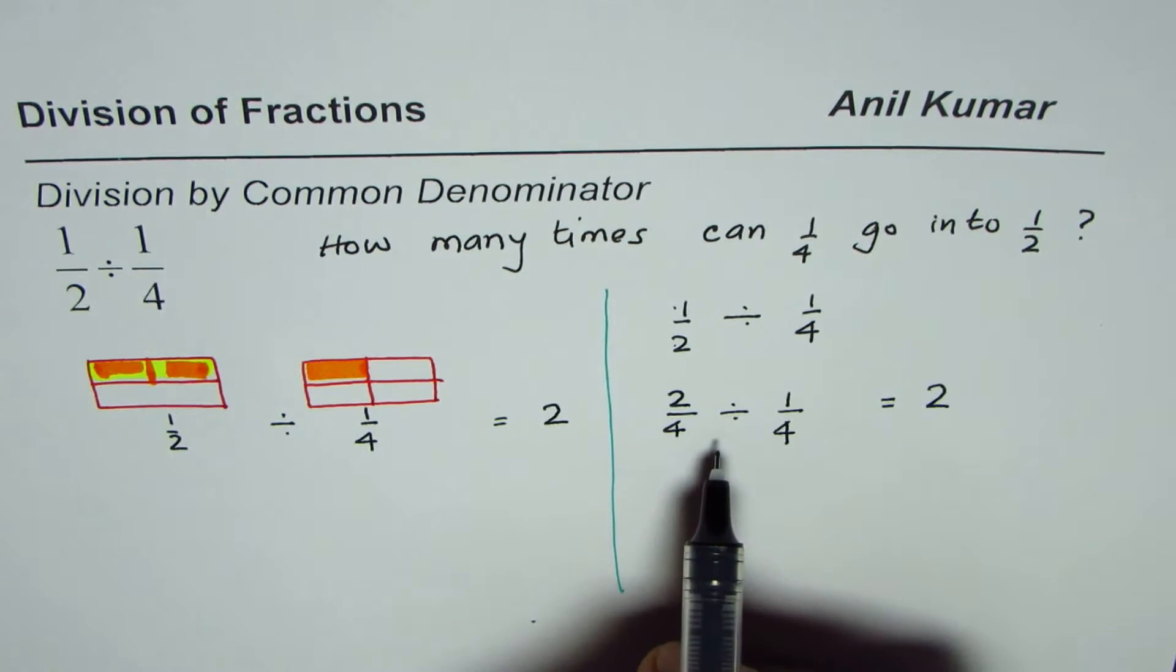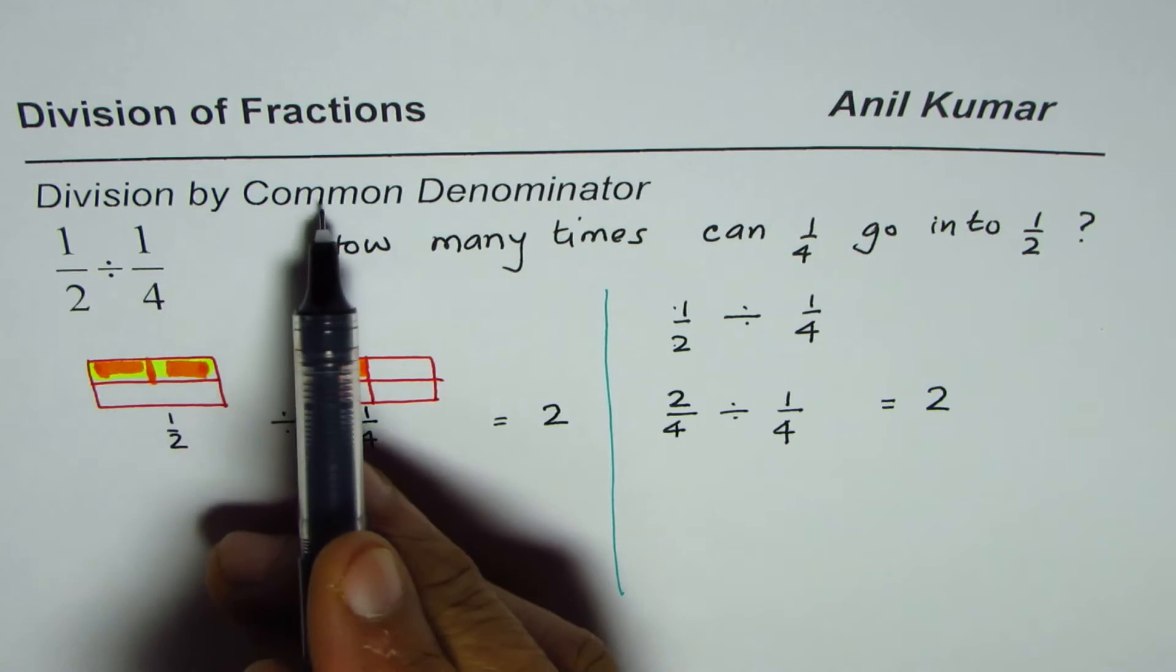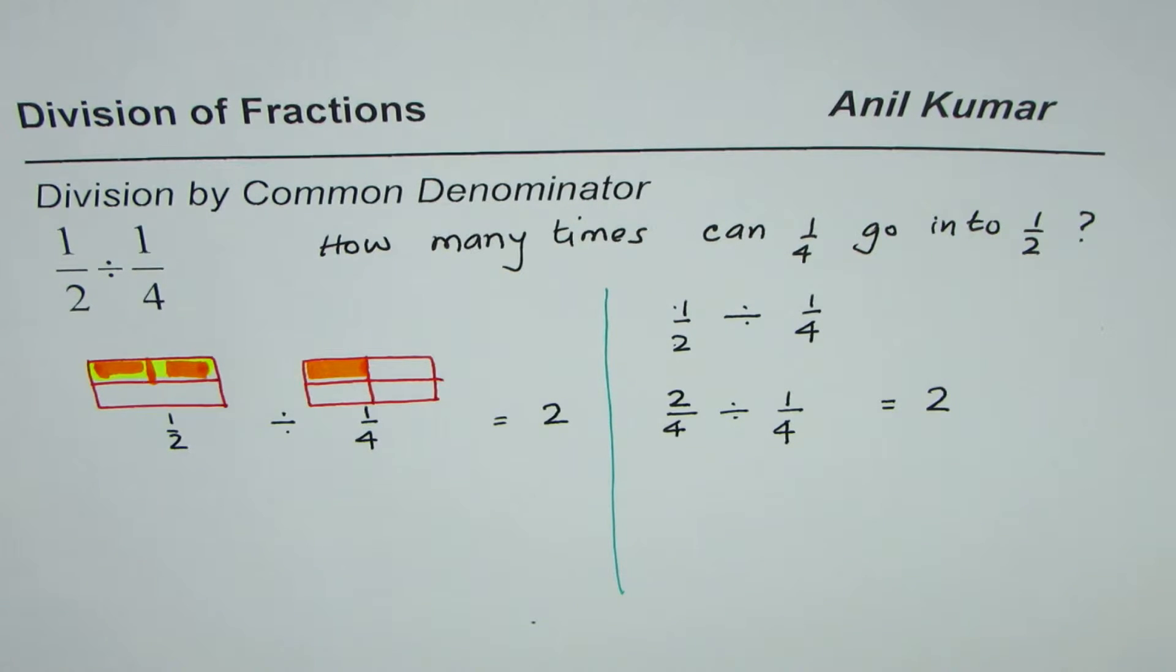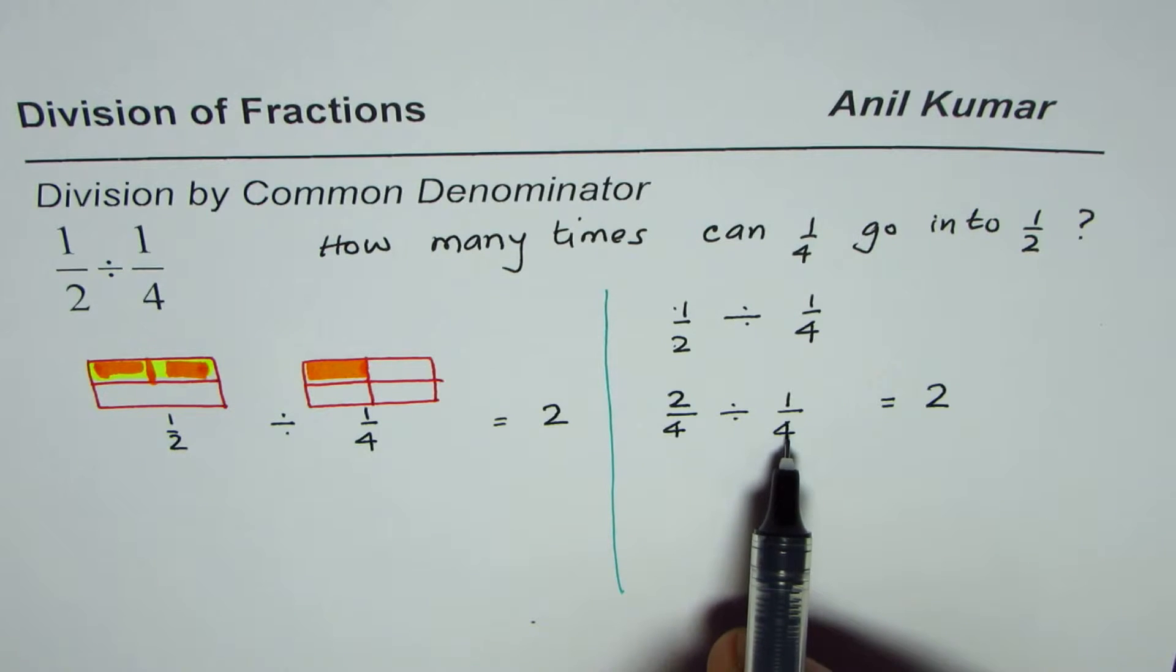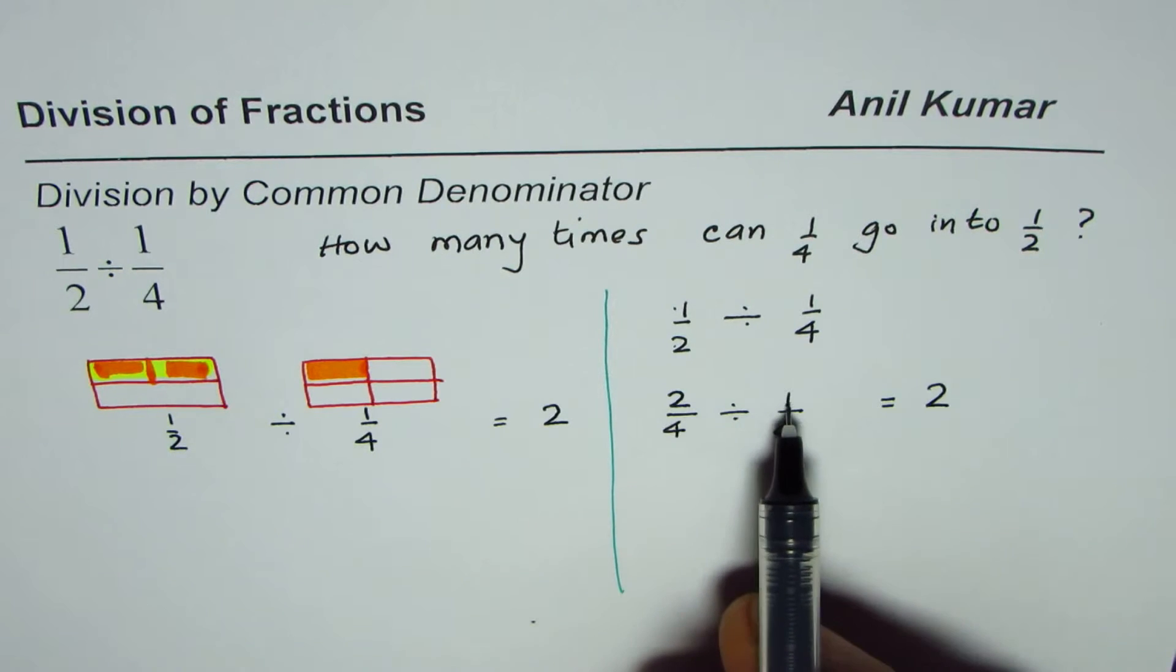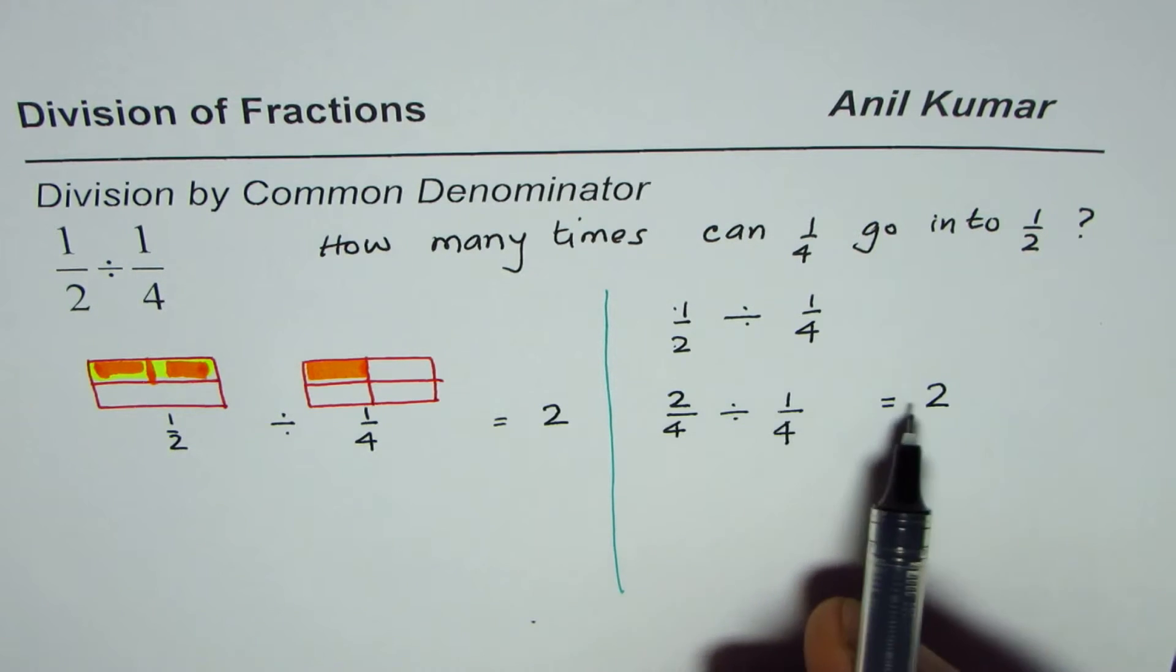So this strategy is division by common denominator. Division by common denominator is kind of dividing whole numbers. Since we have the same denominators, we are only dividing the numerators, which are whole numbers.